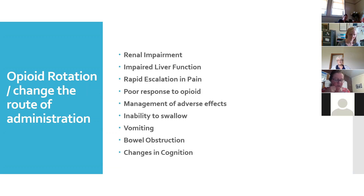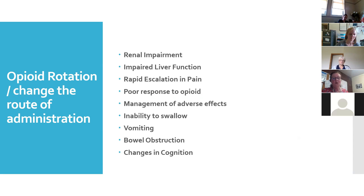Sometimes the resident or patient will require a change of the route of the medication as well. The most common change is from an oral medication to a subcutaneous medication, or to a transdermal route such as patches. Changing from oral to subcut is often required at end of life when a patient is unable to swallow, but it can occur at other times — such as difficulty swallowing, severe nausea and vomiting, bowel obstruction, or for patients with changes in cognition such as delirium or dementia.